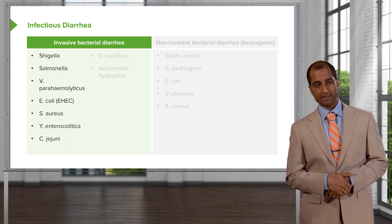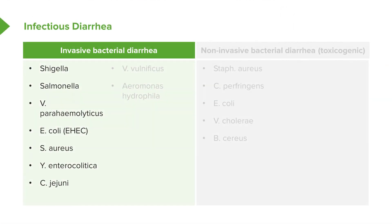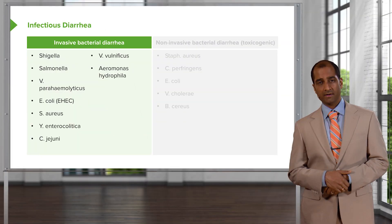Campylobacter jejuni is the most common cause of gastroenteritis in the United States. We also have Vibrio vulnificus — heard of this down in the Gulf — where a patient has been swimming in affected waters. These patients can have pretty severe diarrhea to the point of increased risk of mortality. That is no joke. And we have Aeromonas hydrophilia.